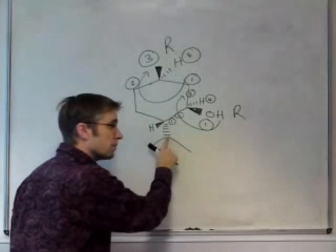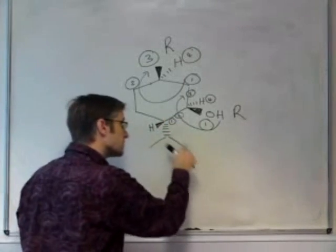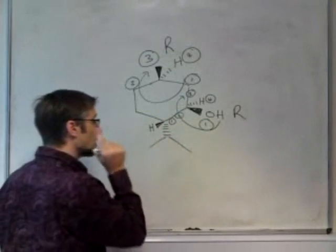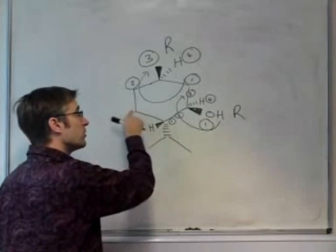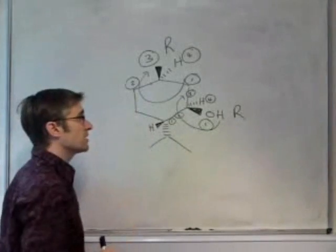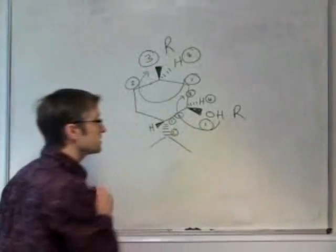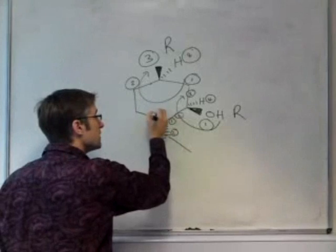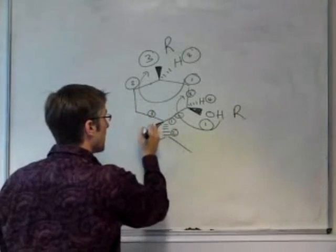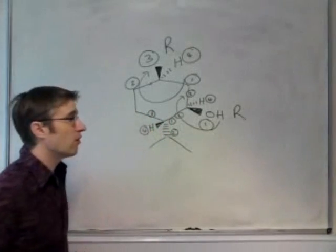This carbon, which has two carbons and a hydrogen attached, will outrank this carbon with two hydrogens and a carbon attached, because carbon has the higher atomic mass than hydrogen. So this is priority two, and this side is priority three, and the hydrogen is priority four.